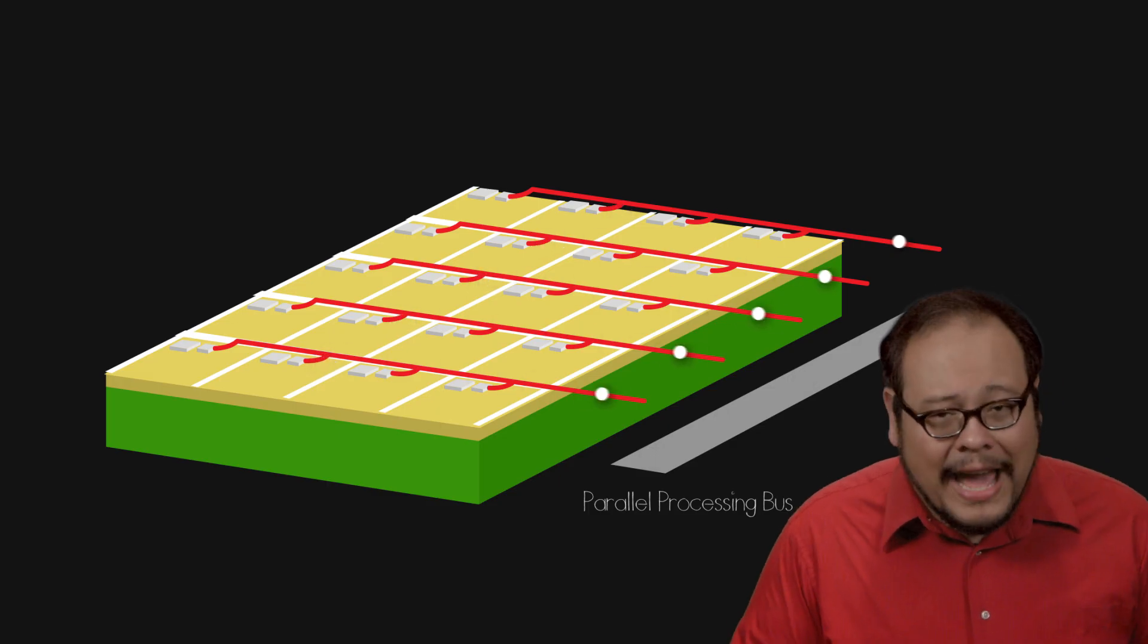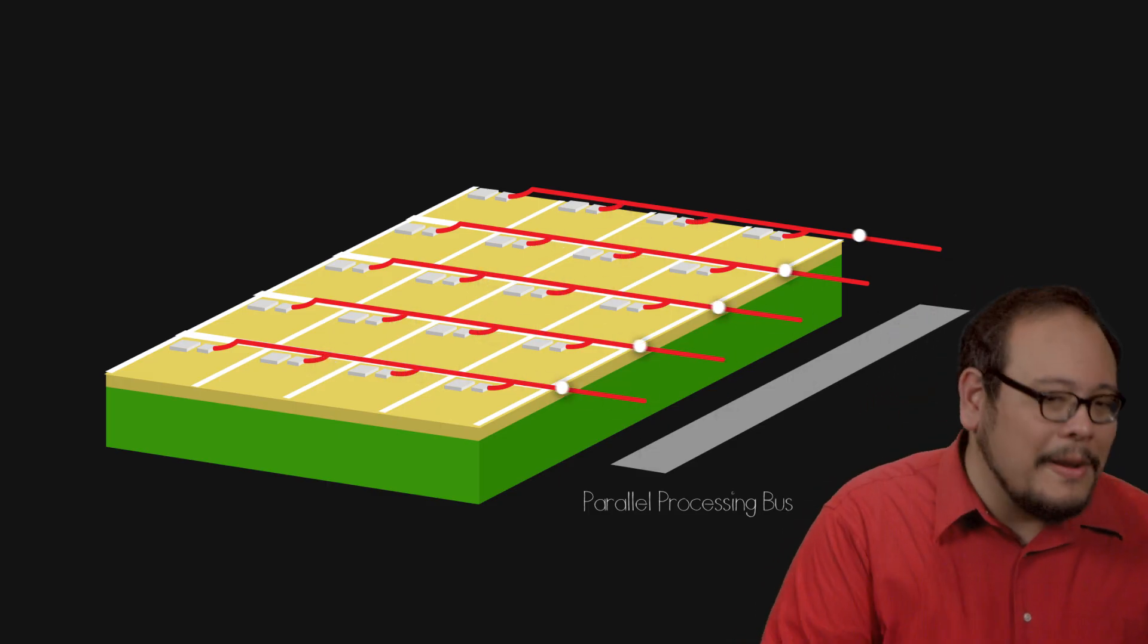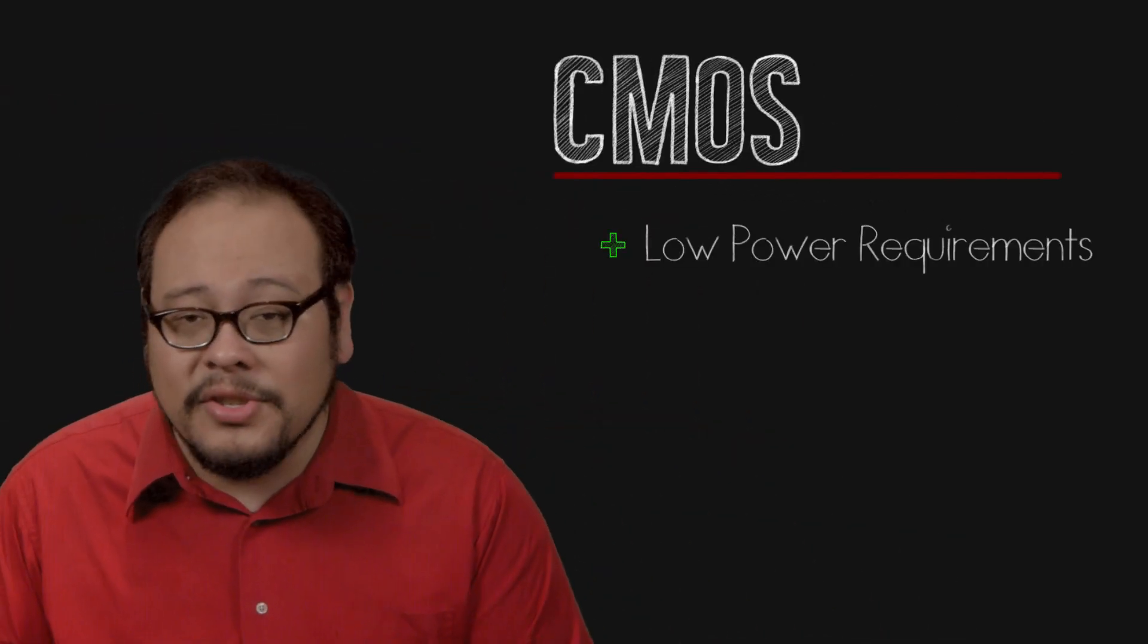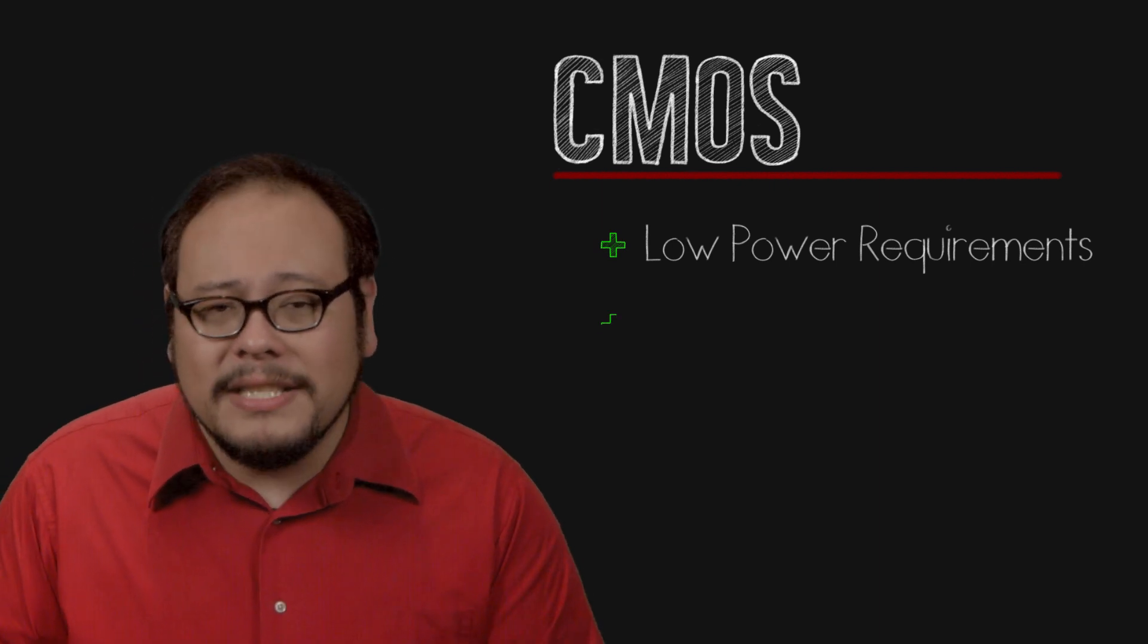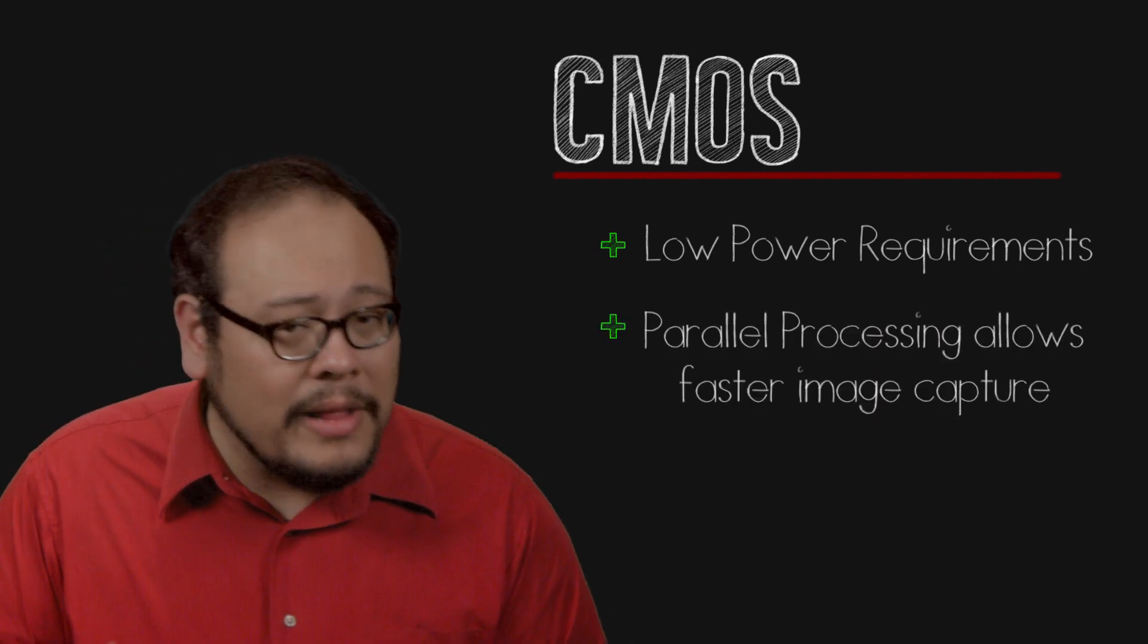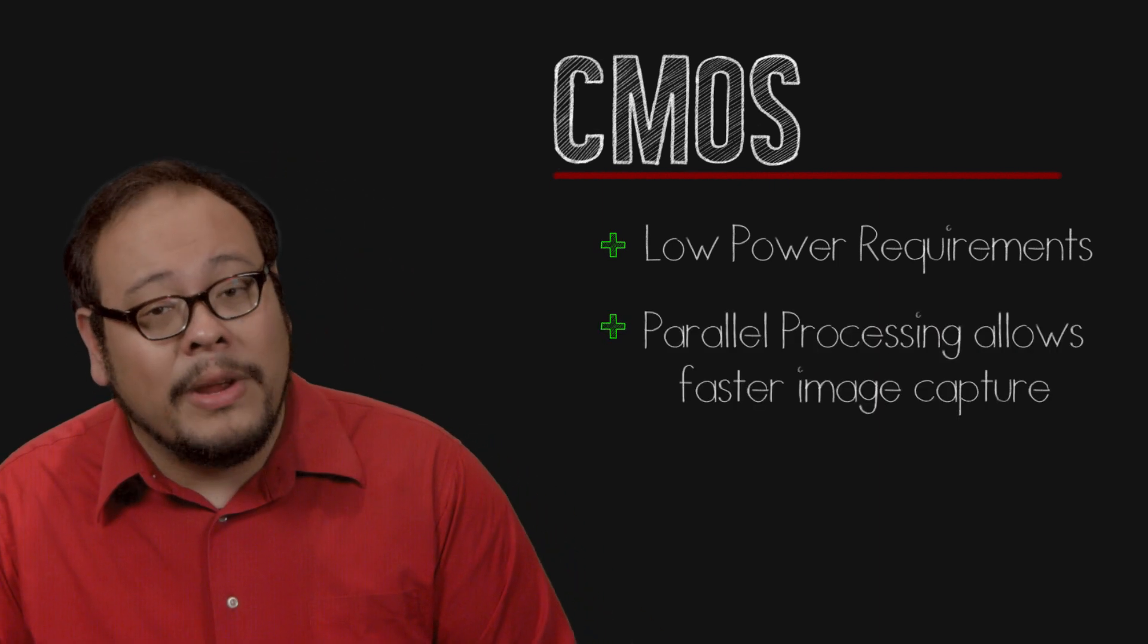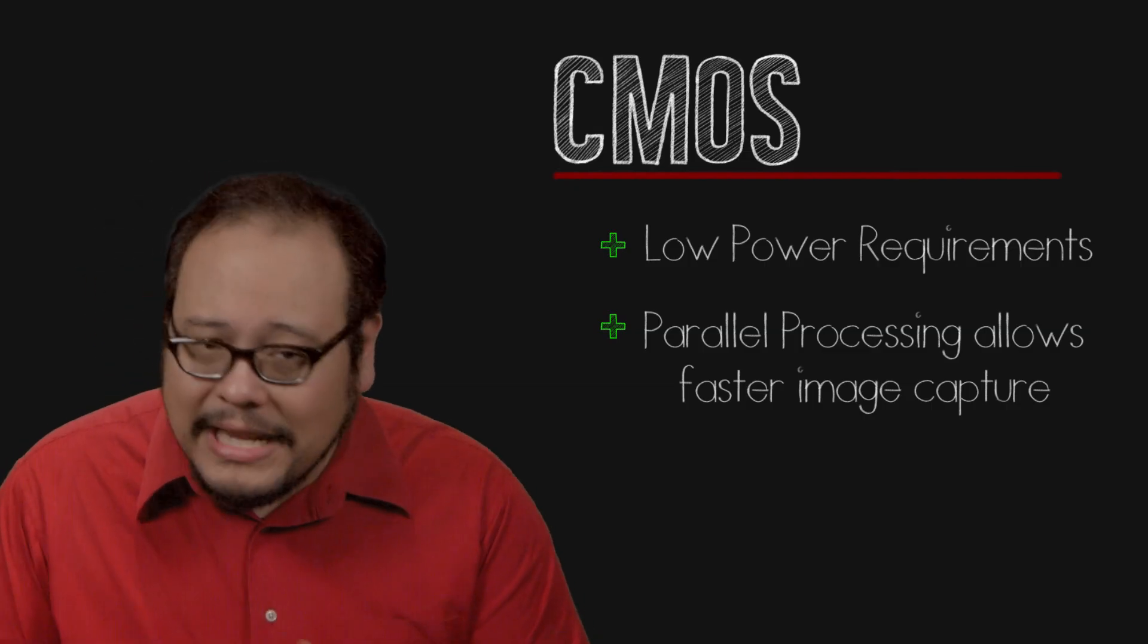Now despite the fact that each pixel has its own capacitor and signal amplifier, CMOS sensors draw much less power because there's no need to shuttle electrons like in a CCD. Because the voltage data is read in parallel, CMOS sensors are capable of reading the data off the sensor much faster.